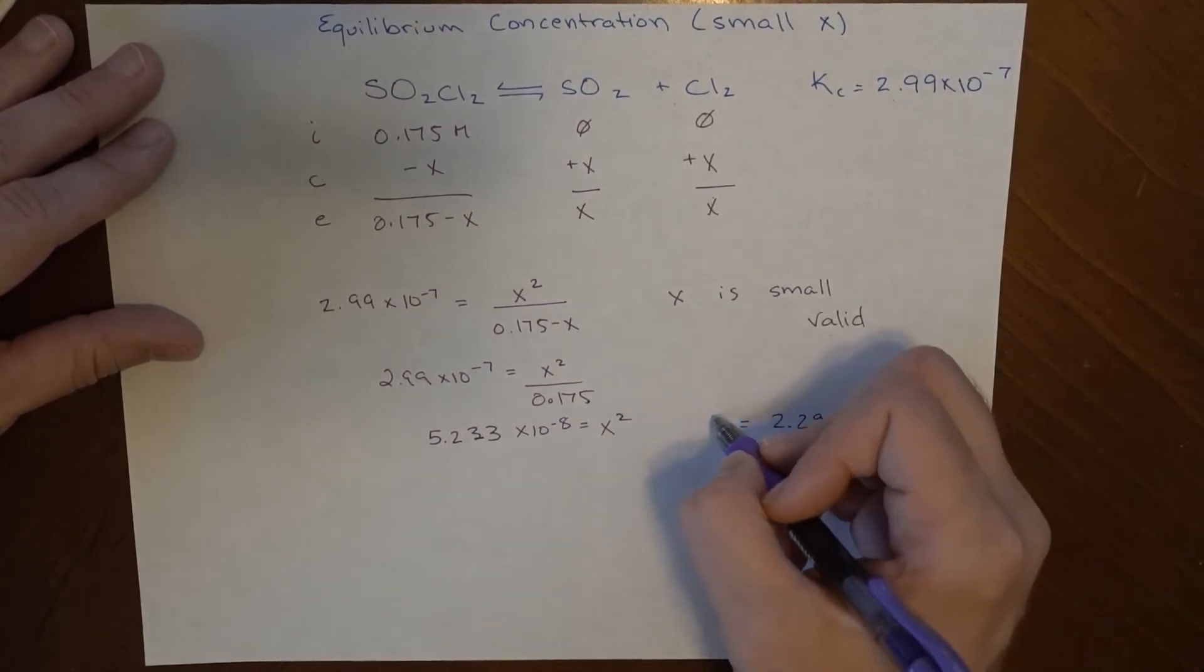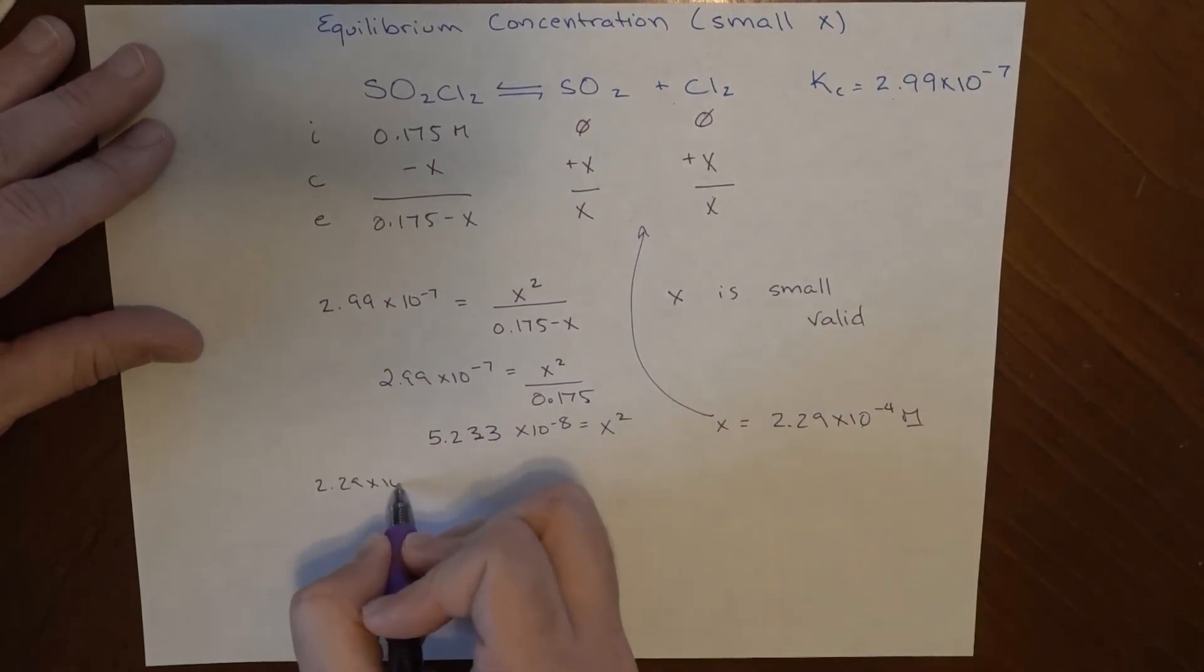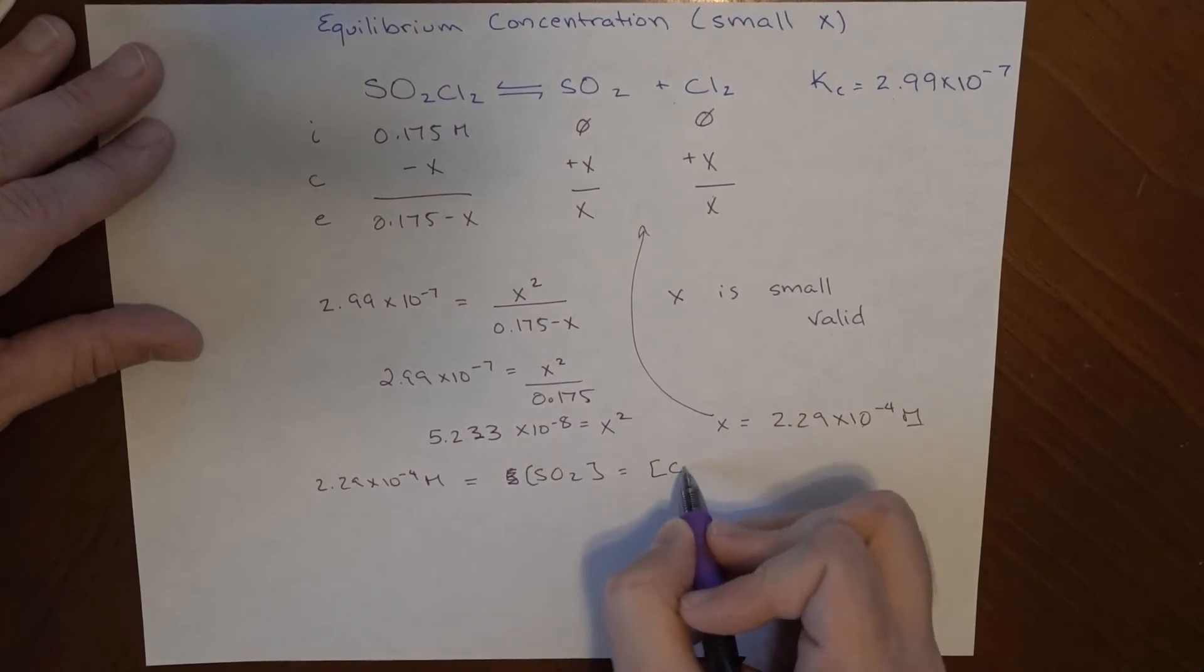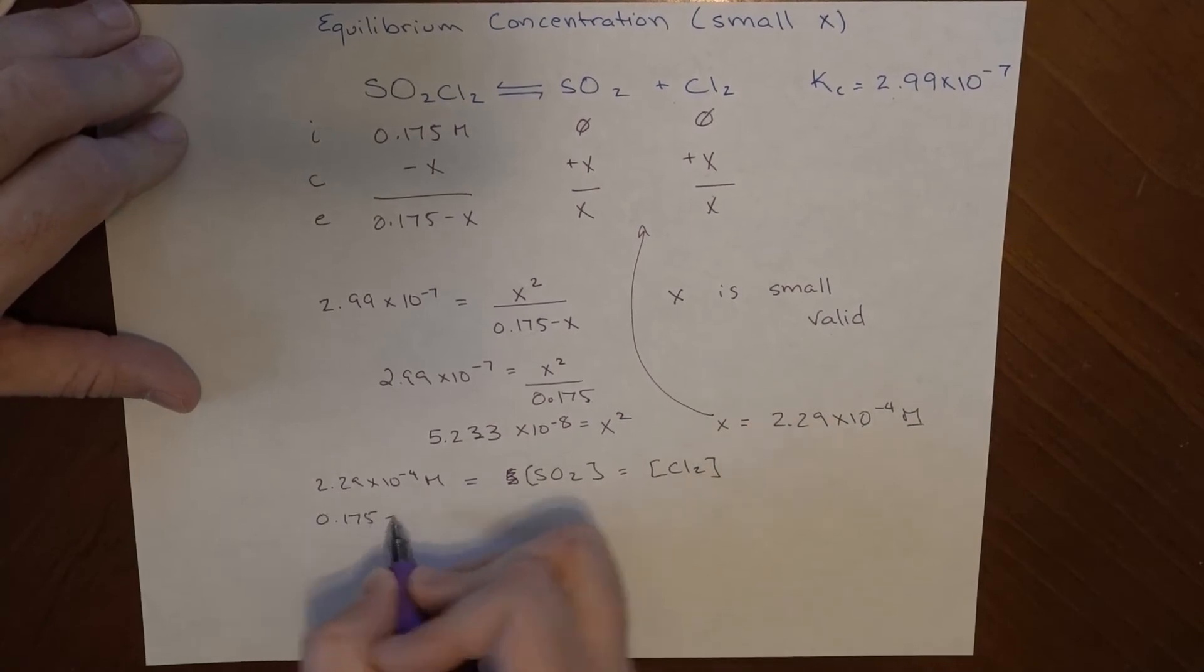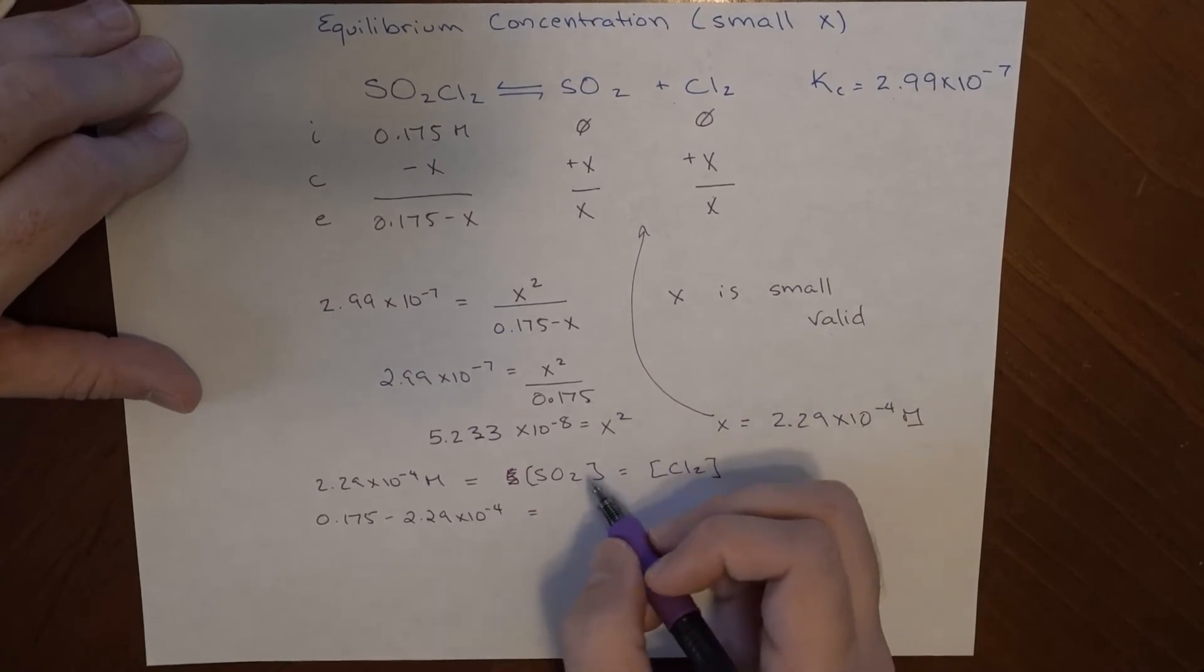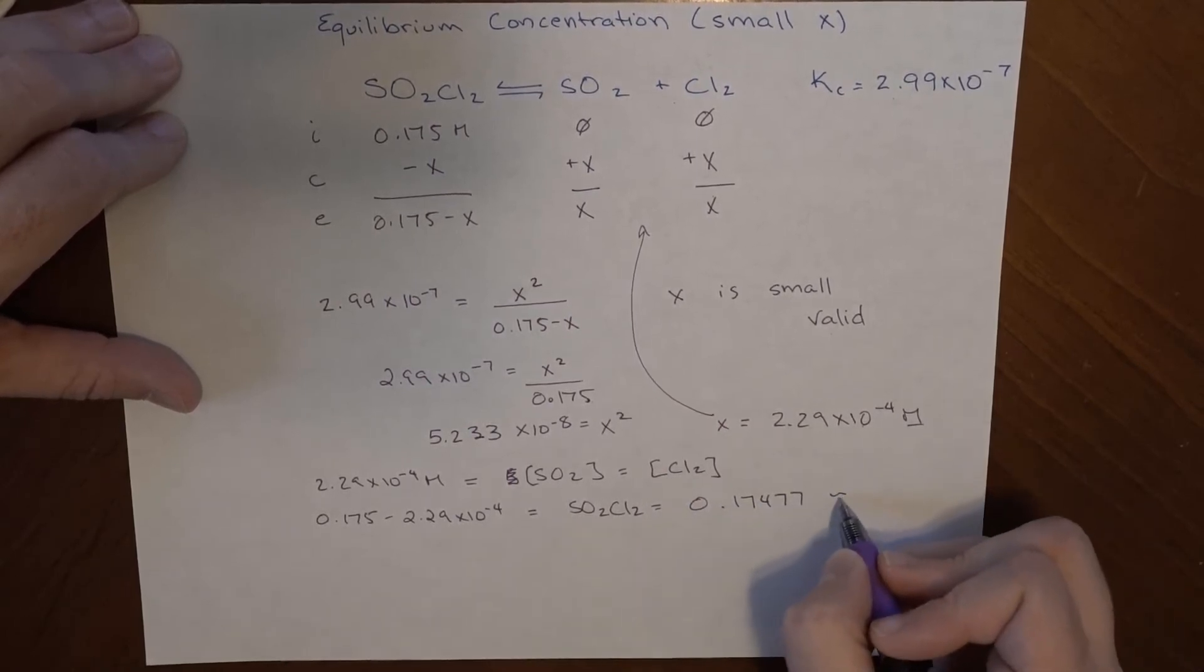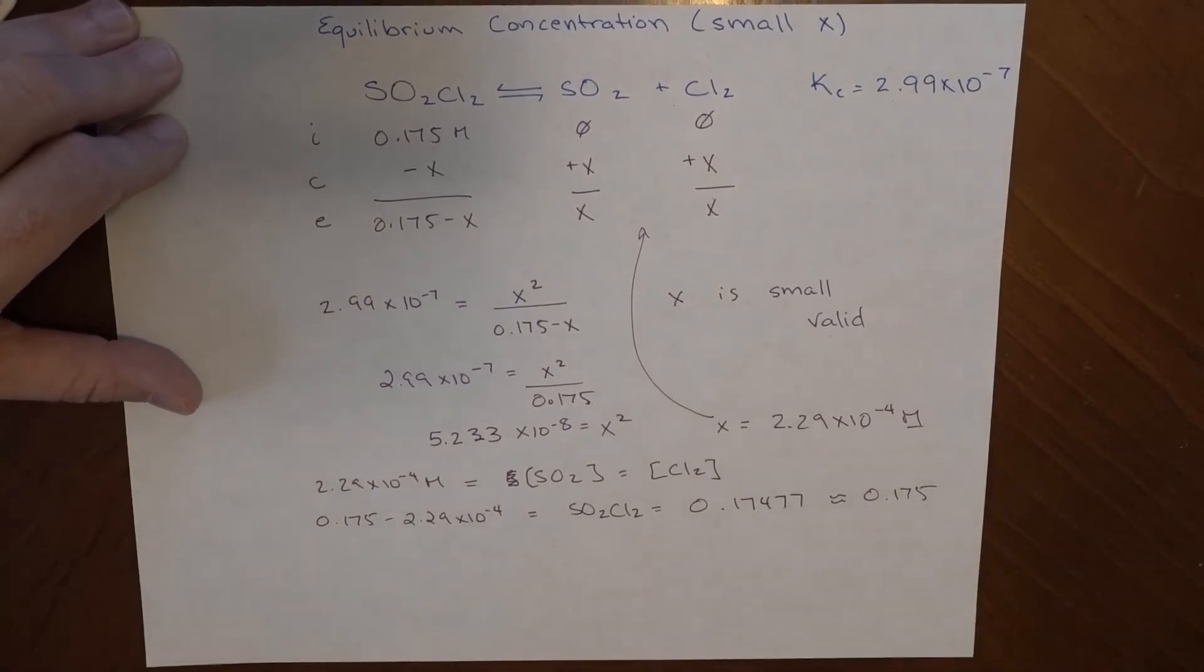So now I have my x. That's great. I can just plug that back up into this stuff. So 2.29 times 10 to the minus 4 molar, that is equal to my concentration of SO2, which is also equal to my concentration of Cl2 at equilibrium. And then 0.175 minus that number is equal to my concentration of SO2Cl2. And that is actually 0.17477, which is approximately 0.175. This would just round to that, to three significant figures.